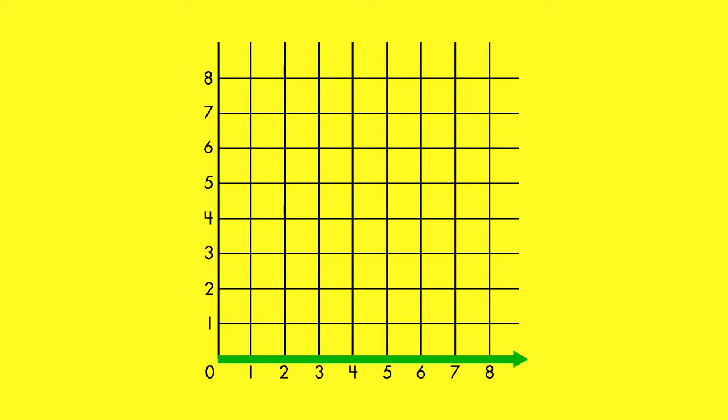The horizontal line is called the x-axis and the vertical line is called the y-axis. The two axes intersect at a point called the origin.